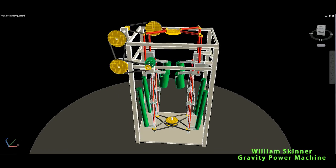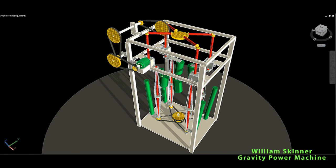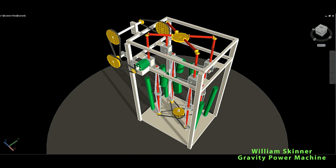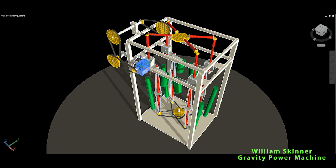And that's basically it. So this is the William Skinner gravity power machine, which gives 12 times or 1200% more power on the output than the power we invested through the drive motor.